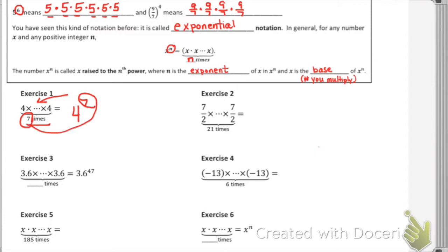For exercise two, that's seven halves, and they would like to indicate that for 21 times, so that's seven halves to the 21st power. We can also have decimals to a power — the power tells you how many times we want to use 3.6 as a factor, so we would write that we want that to occur 47 times.